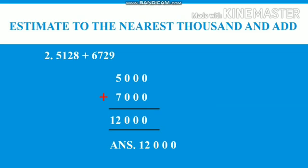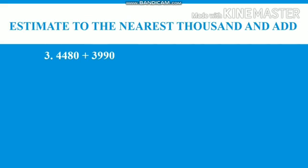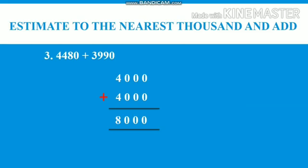It is clear to all? Good. Now our next question is 4480 plus 3990. Now again we will estimate the numbers which is given. 4480 is nearer to 4000 and 3990 is nearer to 4000. Now we will add 4000 and 4000. After adding we will get 8000. So our answer will be 8000.